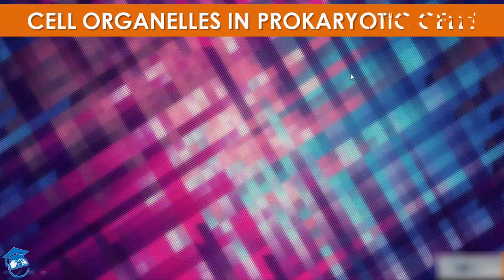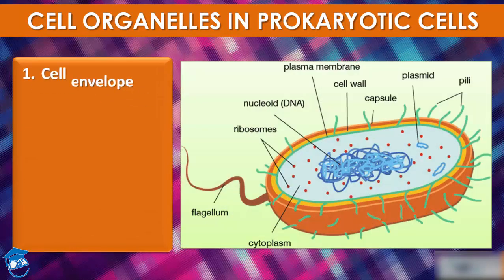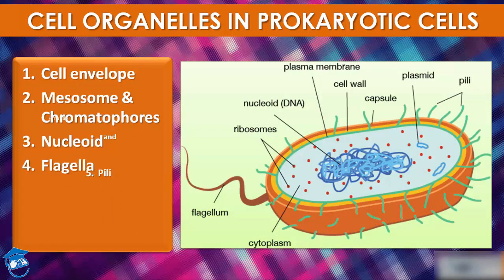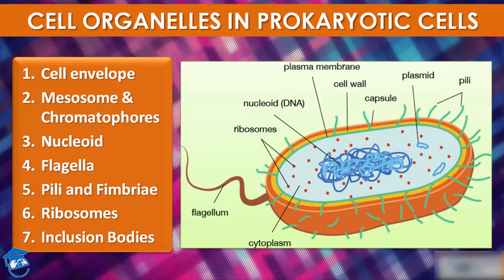Now let's see the cell organelles in prokaryote cells. The prokaryote cell has: cell envelope, mesosome, nucleoid, flagella, pili or fimbriae, ribosomes, and inclusion bodies. These are the seven cell organelles found in prokaryotic cells.